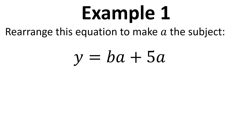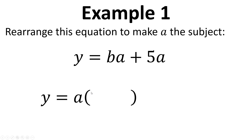The first example is to rearrange the equation shown here to make A the subject. Now A appears twice, so we're going to have to do something referred to as factorising. We're going to have to put some brackets in and take A outside of the bracket, and then we need to put things inside the bracket such that if we were to multiply this back out we'd end up with these terms again.